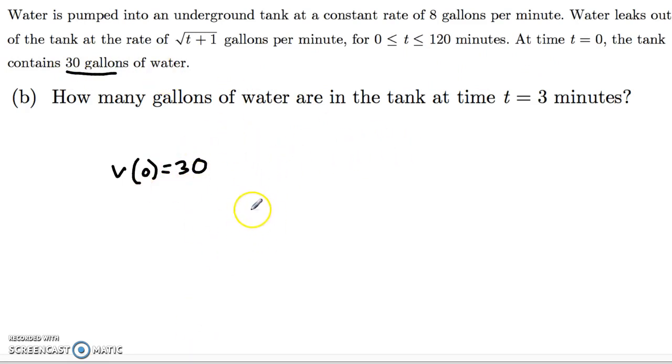So we know that there are 30 gallons of water in the beginning, but over the first 3 minutes, how much additional water is going to go in? Well, if water is going in, remember the volume was increasing at a rate of 8 gallons per minute. So over 3 minutes, that's going to be 24 gallons.